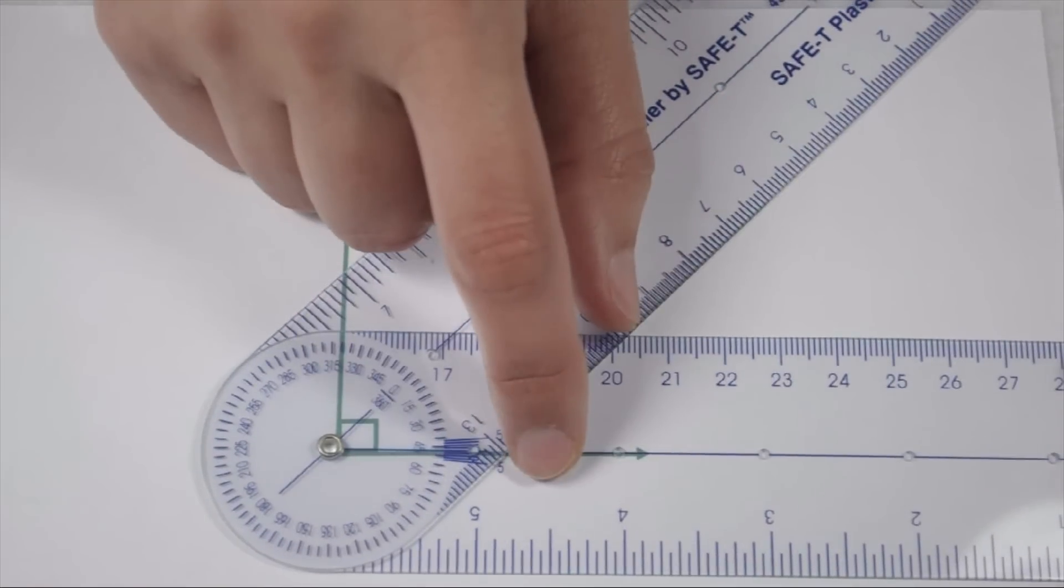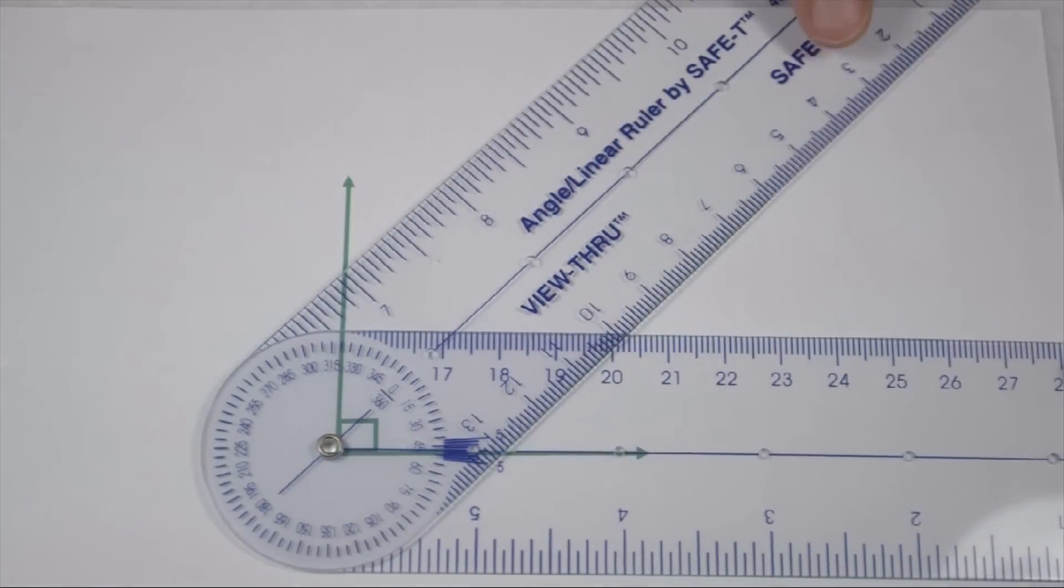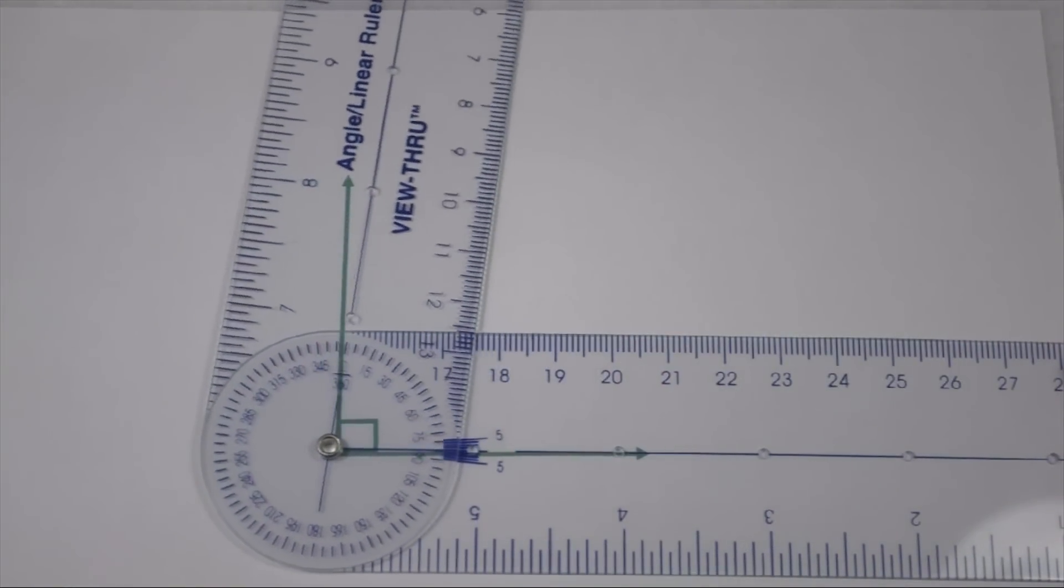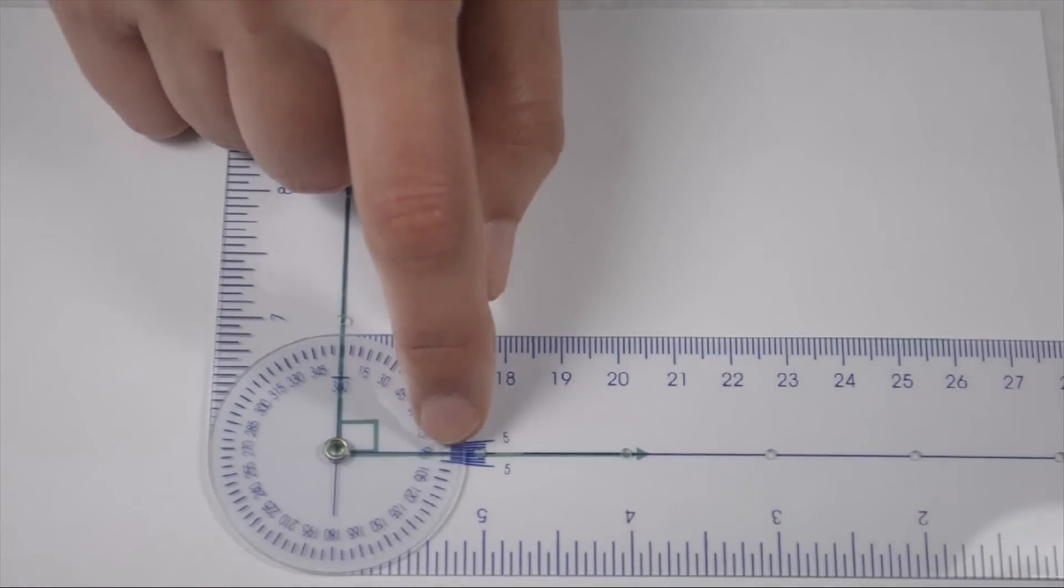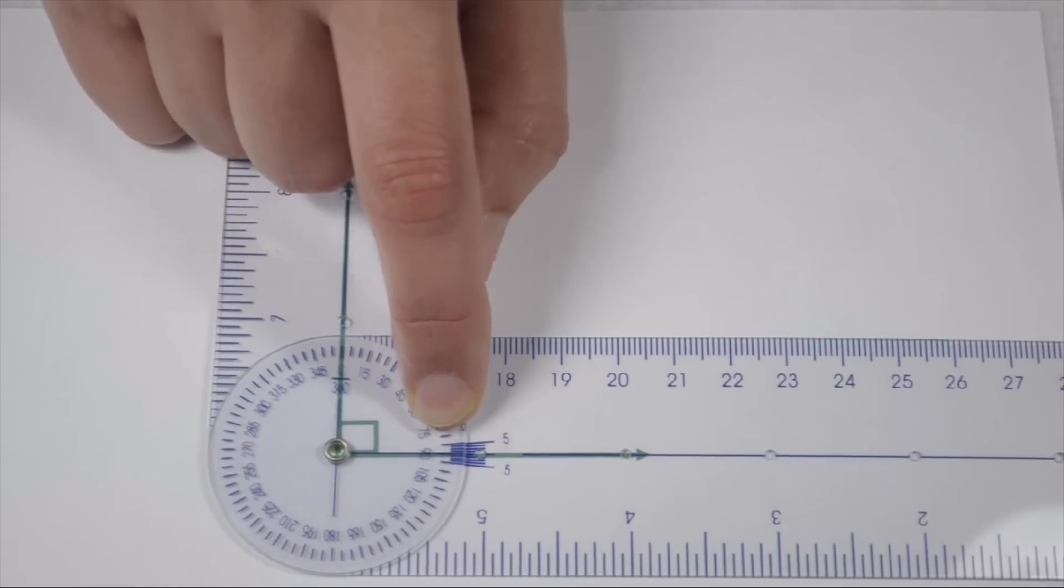I'm going to line up my blue line with my bottom ray. And now I can swing the top arm around until it crosses with my other ray. When I do that, I can then look on the dial to see where it crosses at.